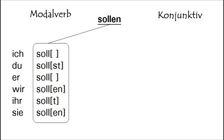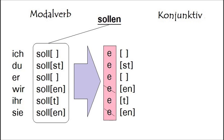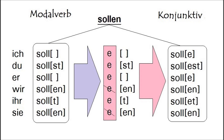The Konjunktiv 1 conjugation is simple — it is just like the conjugation of a modal verb, with one difference: after the stem, there must be an E. For example, 'sollen' is a modal verb. Its conjugation is: ich soll, du sollst, er soll, wir sollen, ihr sollt, sie sollen. Adding an E after the stem gives the Konjunktiv 1 forms: ich solle, du sollst, er solle, wir sollen, ihr sollt, sie sollen.